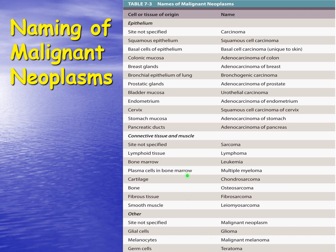One important note: if melanocytes are the origin of the tumor, it's a malignant melanoma — there is no benign form of melanoma; these are always malignant. The other thing is that germ cell origin tumors are called teratomas. Teratomas are always benign, even though they appear on the malignant neoplasia list.